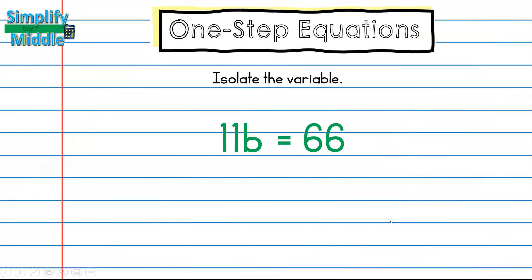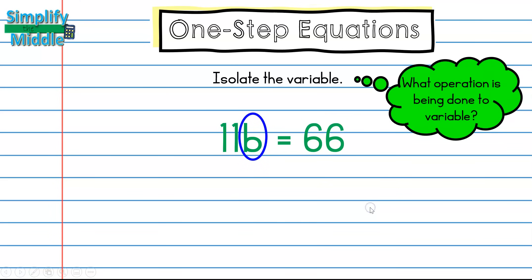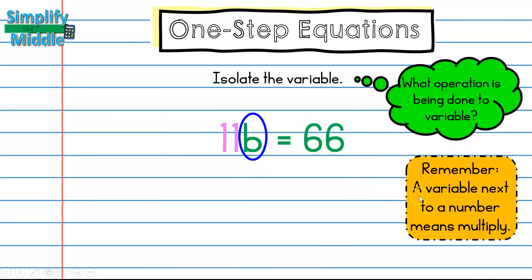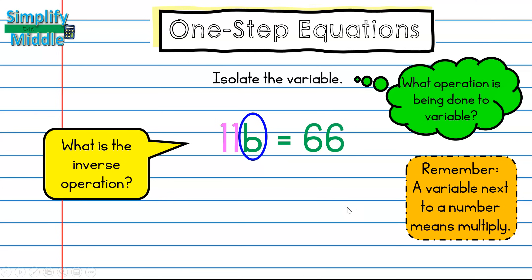For this problem, I will still isolate the variable, which in this case is on this side. It's b. I'm going to ask what operation is being done to the variable. Well, I see there's an 11 outside here of a coefficient of 11. Remember, when a variable is next to a number, and that means it's a coefficient, it means to multiply. So what is the inverse of multiplication?